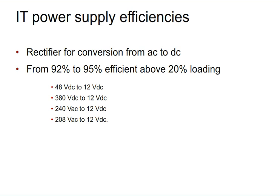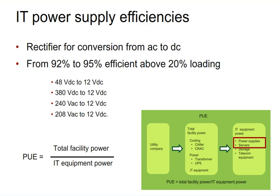The IT power supply also has losses — a rectifier from AC to DC and some transformation, with about 92-93% efficiency depending on whether it's 380 V DC or 240 V AC. Interestingly, the IT power supply is in the denominator of the PUE equation, so inefficient servers would actually improve your PUE ratio while hurting your overall energy use — which illustrates a key limitation of PUE as a metric.